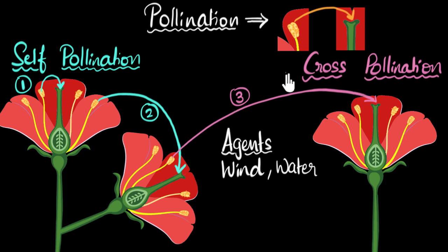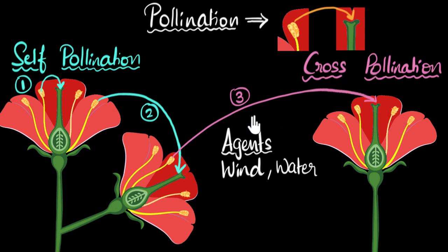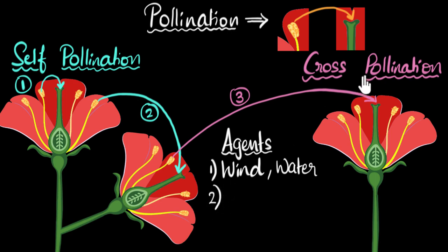But what about cross-pollination? For cross-pollination to happen, pollen grains need to travel from one plant to another. If those trees are very far apart, the chances of cross-pollination reduce. This is where insects come into the picture. Another important agent for pollination, especially cross-pollination, would be insects like bees, butterflies, moths, and even birds.